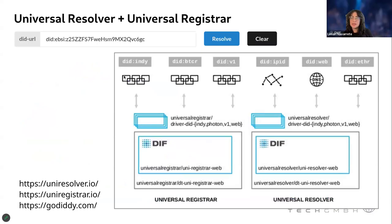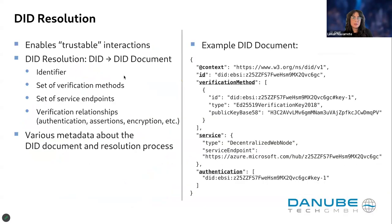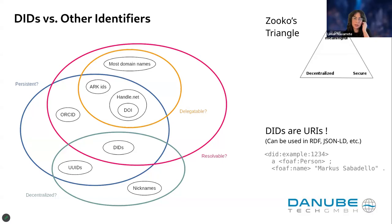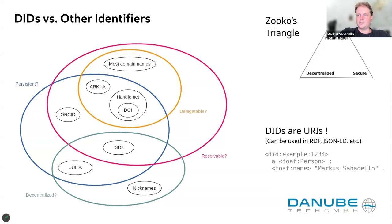For more detail on the differences between DIDs and other identifiers, the SSI book — Self-Sovereign Identity, published by Manning — is a good resource. It's a few years old but still applicable. There's a chapter about DIDs that has more information about different identifiers.